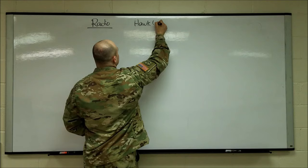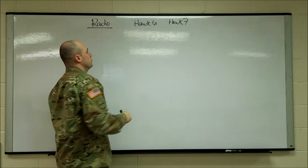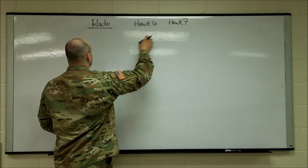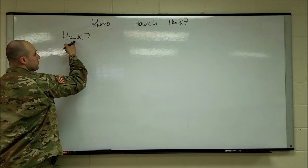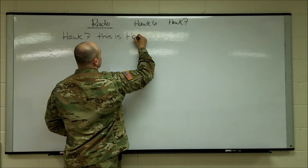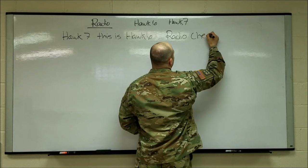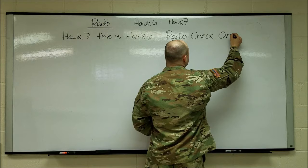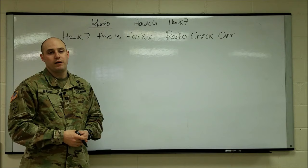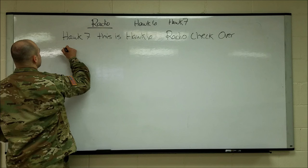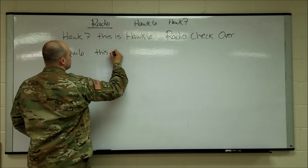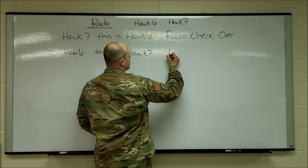We got Hawk 6 and we got Hawk 7. So we got like a platoon leader and his platoon sergeant. And they're going to do a radio check together. So 6 is going to call 7. So he's going to say Hawk 7. Hey you. This is Hawk 6. This is me. Radio check. And then what's he got to say at the end of the transmission? Over. So now that he's said over, Hawk 7 knows that he's requiring a response. He's asking for a response. So he will say back, Hawk 6. This is Hawk 7. Roger. Over.